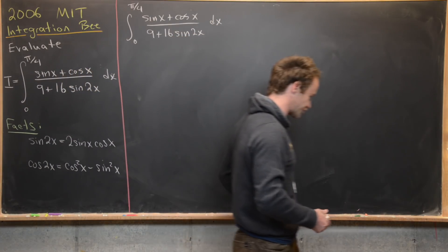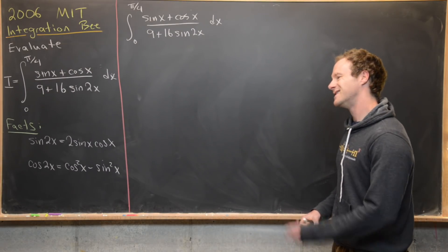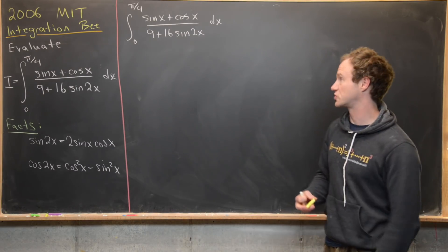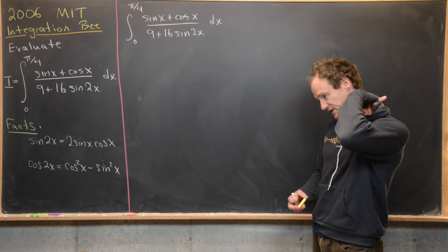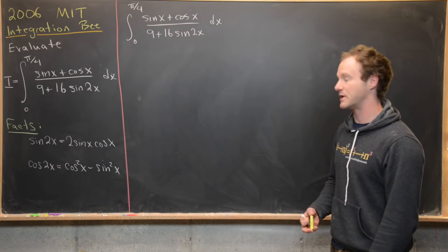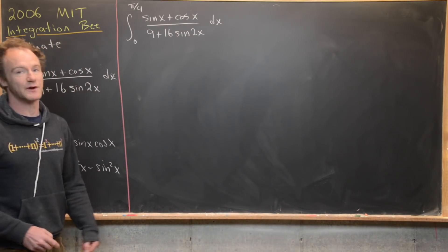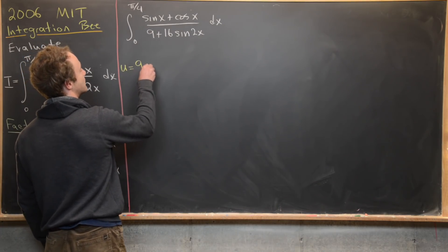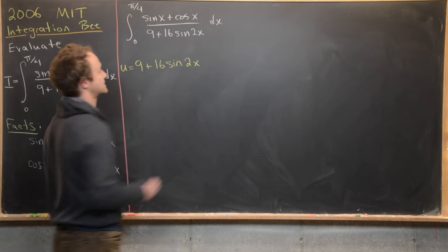We're just going to do straightforward substitutions, kind of follow our nose, not thinking that we've worked on this problem before and so we don't know what the tricks are. Maybe the first thing we'd like to do is make some sort of u-substitution for the denominator — that's a common first step. So let's set u equal to 9 plus 16 times sine 2x.